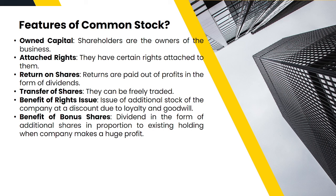Other attached rights include dividend entitlement — shareholders may receive dividends if the company makes a profit and decides to distribute it — and the right to access certain company information. The next feature is return on shares: whenever the company makes a profit and wants to share it with equity holders in the form of dividends, they are entitled to receive that dividend.